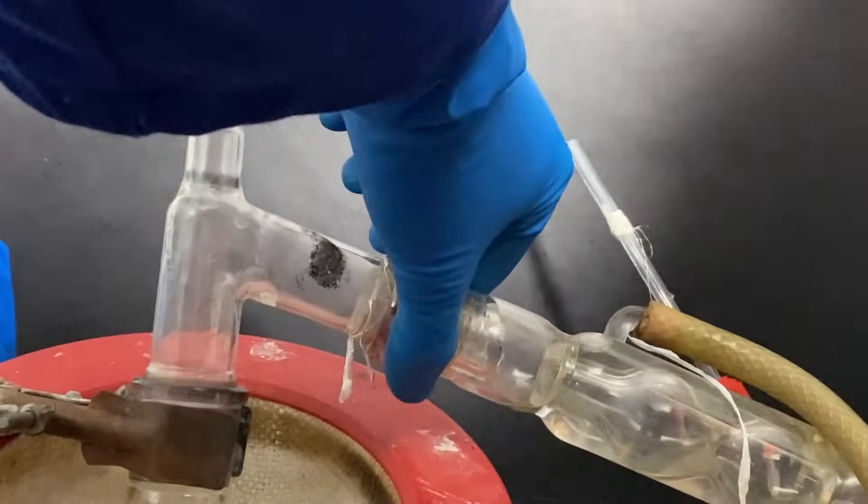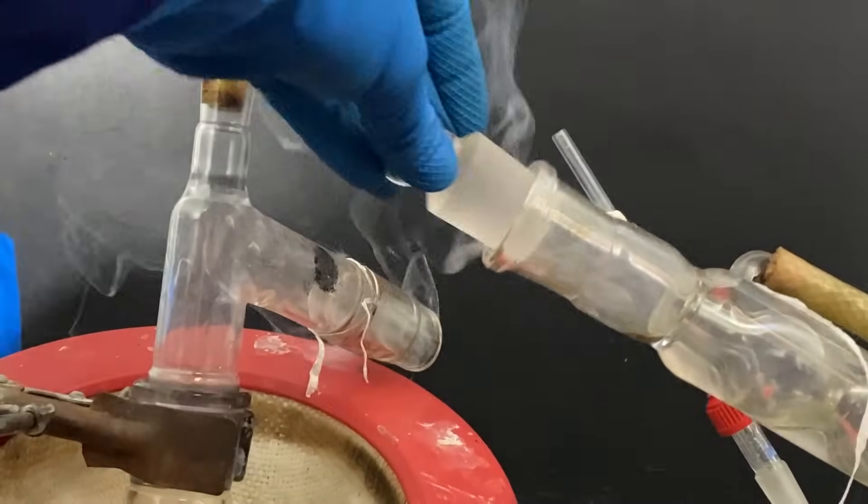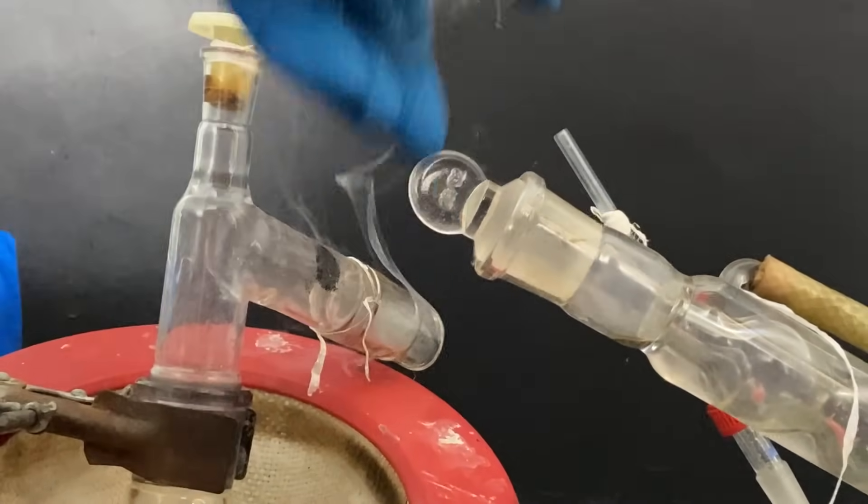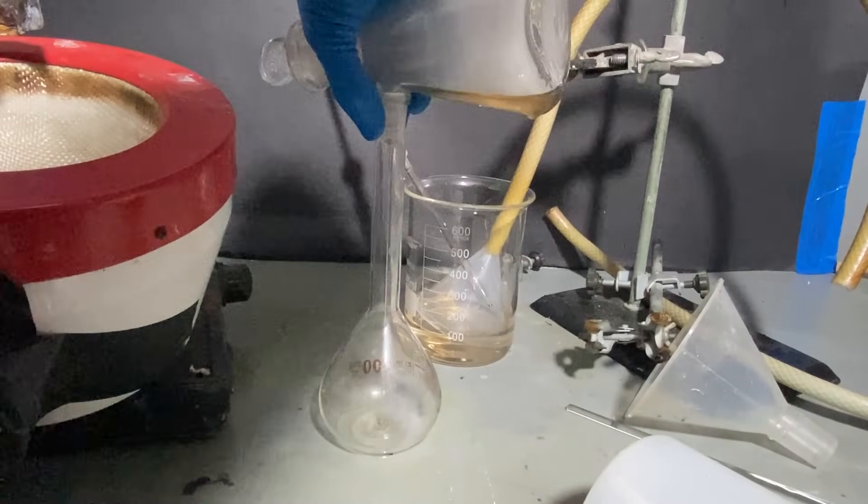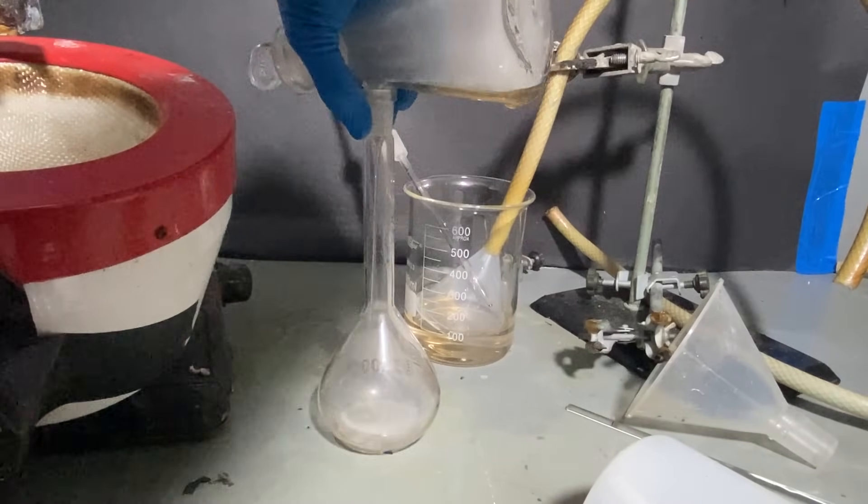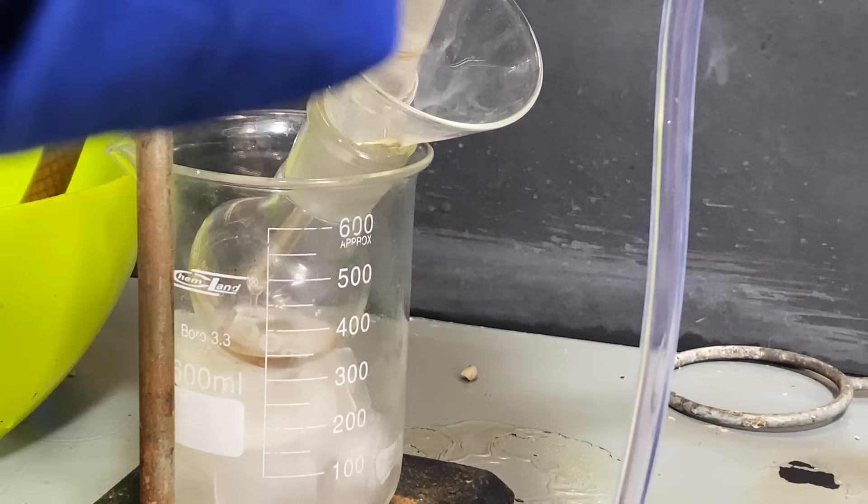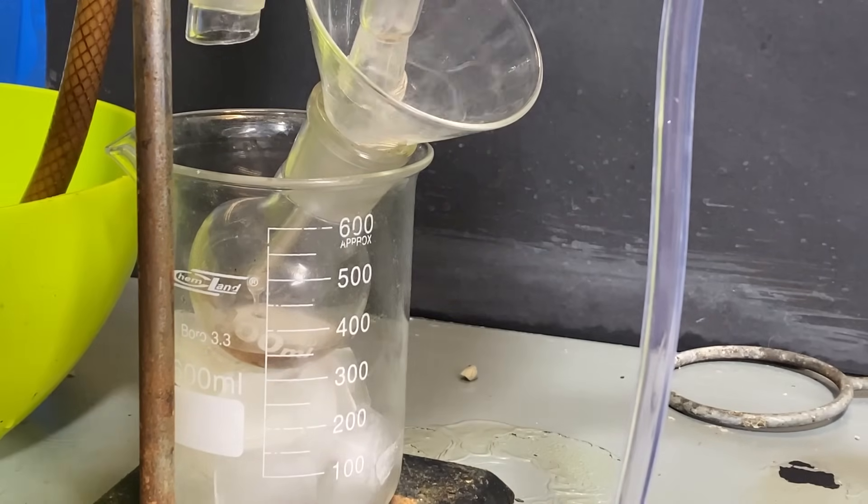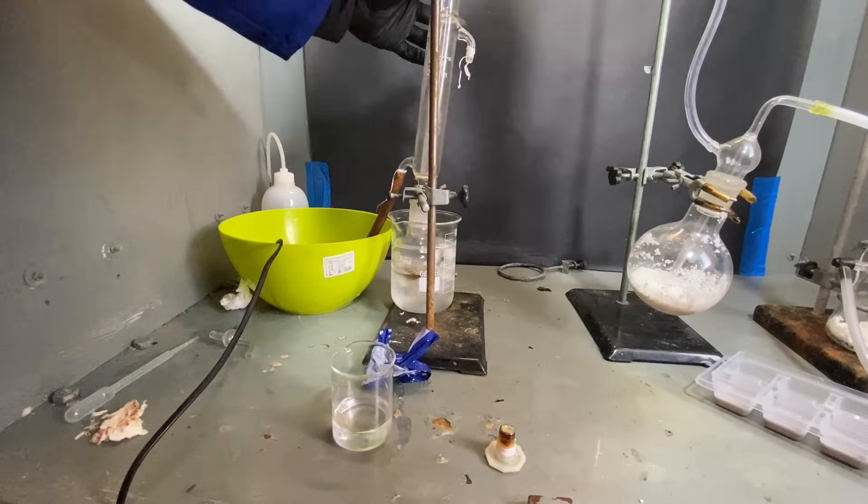Anyway, I've disconnected the condenser, tilted it, so the oleum could flow all the way into the collection flask, and I've collected all the fuming sulfuric acid. Anyway, next day, I've transferred the oleum into a boiling flask, and I've set up this really cringy apparatus.